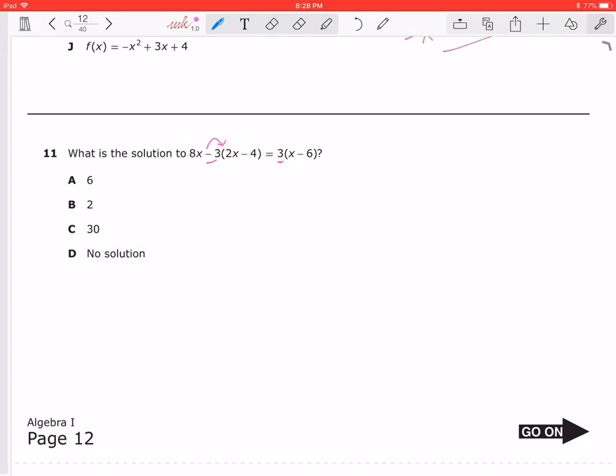This may or may not be a quadratic, we don't know yet. So I'm going to distribute that negative three to both terms inside the parentheses.